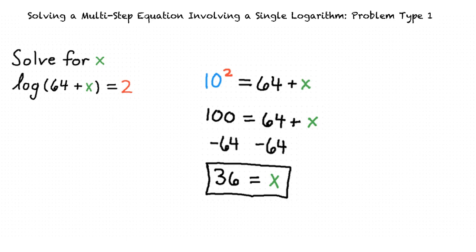Okay. I think I understand this all now. To solve a multi-step equation involving a single logarithm, we must be able to express a logarithmic equation in exponential form. Doing so, we can solve for unknown variables more easily.